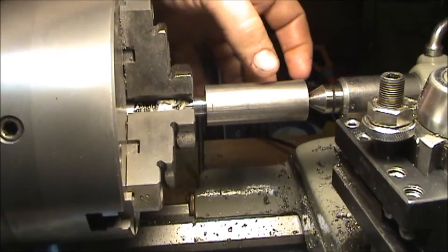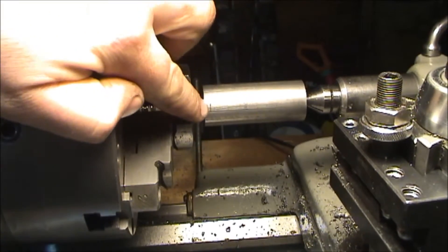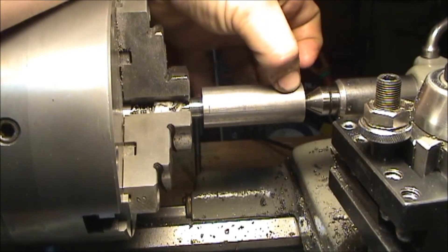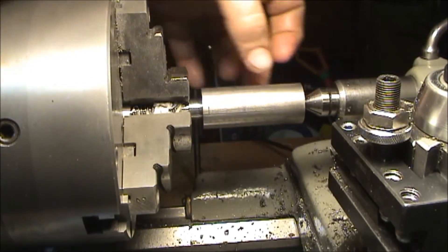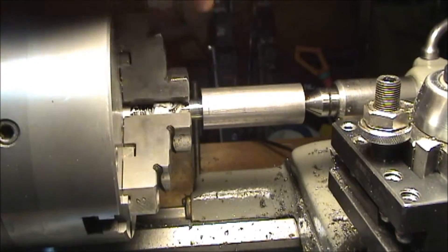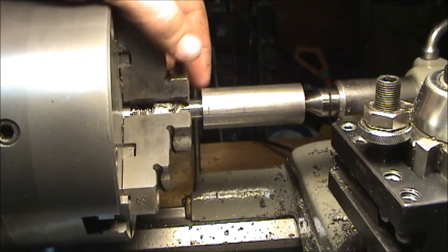This shank up until here, the largest diameter on that is half an inch, so I need to machine this down to half an inch. Now we're grabbing it by the threads, but I have paper in between each jaw.